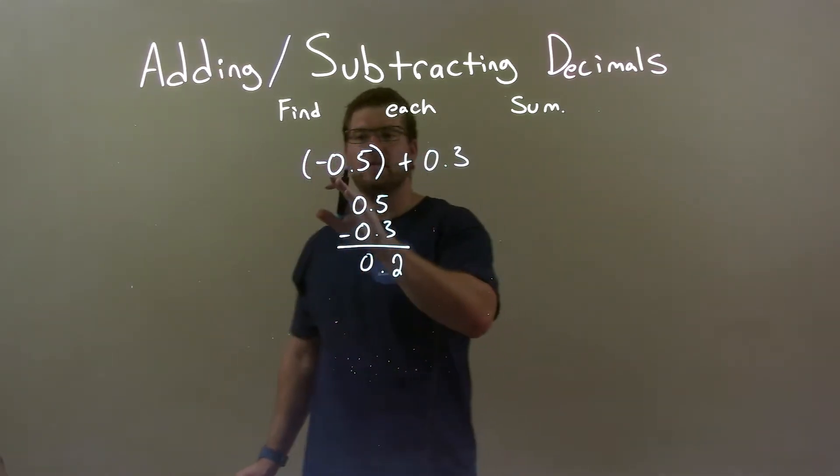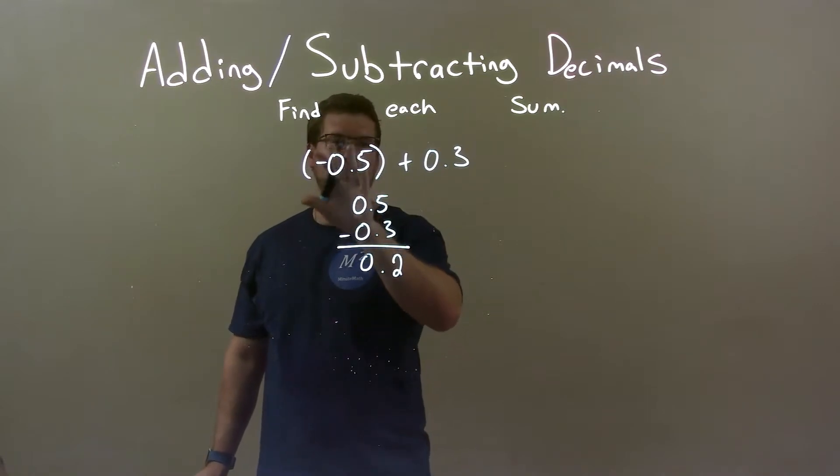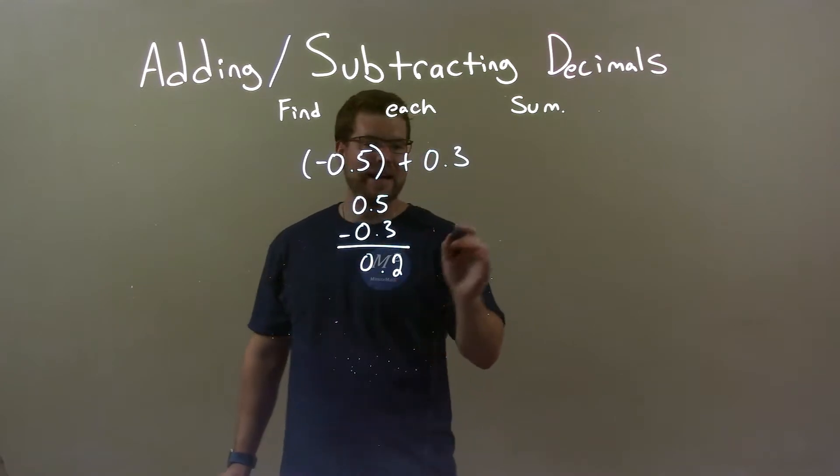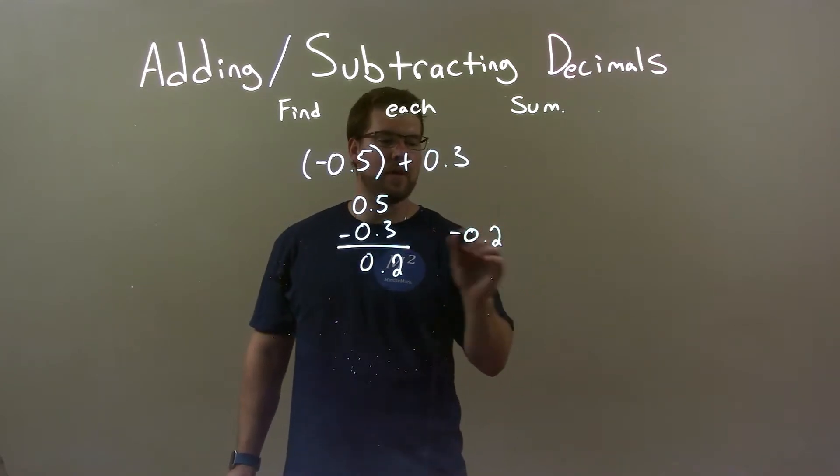But again, like I said, since 0.5 was a negative and was larger than 0.3, but think about the absolute value of it, we had to make it a negative.